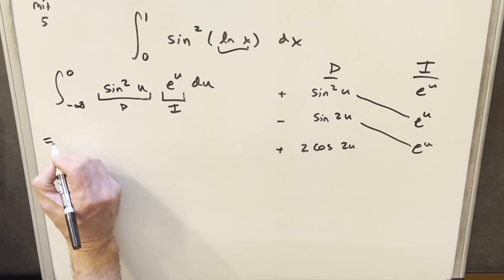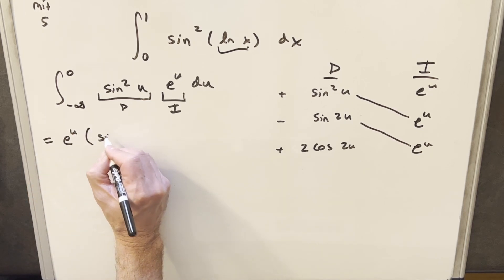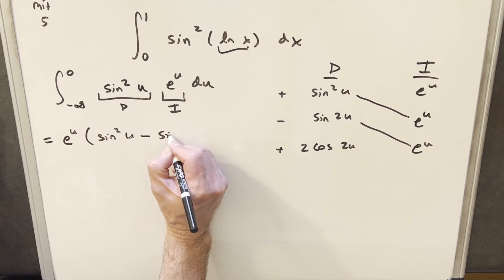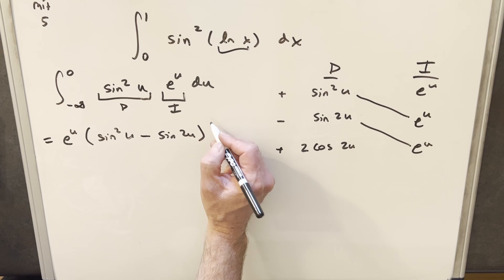So what I'm going to do first is I'm going to just factor this e to the u out and write this as sine squared u minus sine 2u. In this piece, we're evaluating from minus infinity to 0.